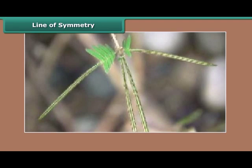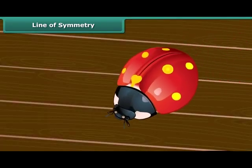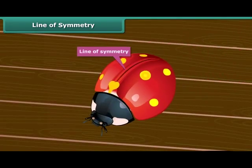This particular line created by folding of the leaves is called the line of symmetry. This bug also has a line of symmetry along which it folds into two identical halves.